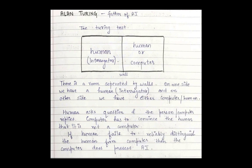The computer has to fool the human being by acting like a human. The computer replies to questions, and has to convince the human that it is not a computer. If the interrogator fails to reliably distinguish the human from computer, then the computer does possess some artificial intelligence.